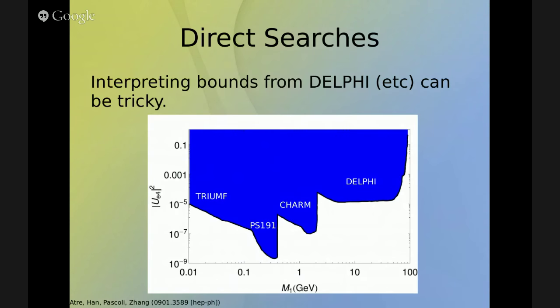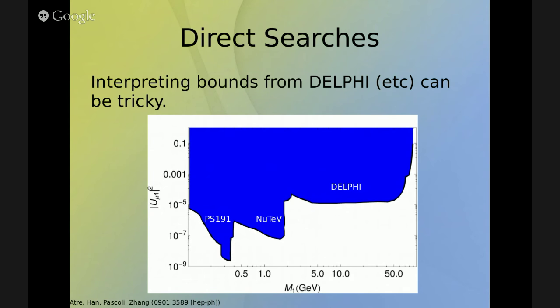The most important constraint is the one from direct searches. Many experiments have tried to directly produce heavy neutrinos. The important constraints for our work are those from CHARM and DELPHI. We are constraining the mixing between the electron neutrino and the lightest heavy neutrino — U_e4 squared. We also have analogous constraints for the mixing between the muon neutrino and the heavy neutrinos, and in our model this is the most stringent one — the bound on the mixing between the muon and the heavy neutrinos.